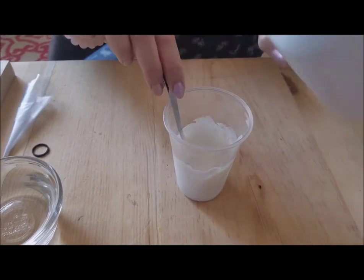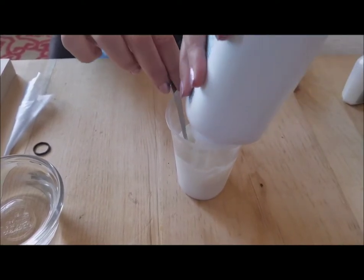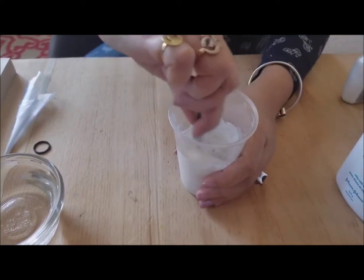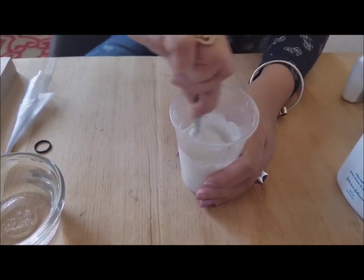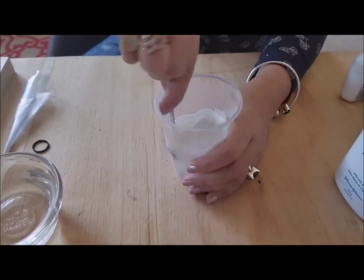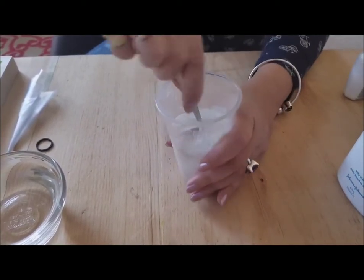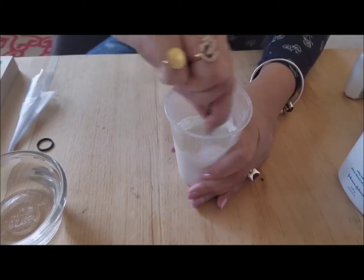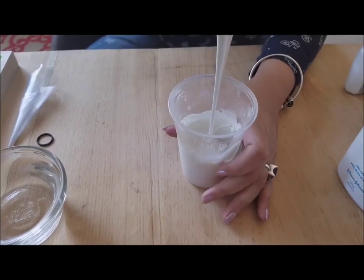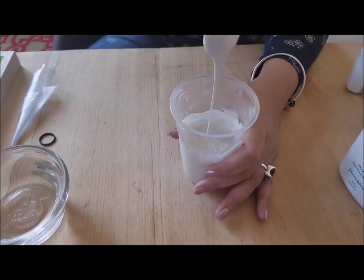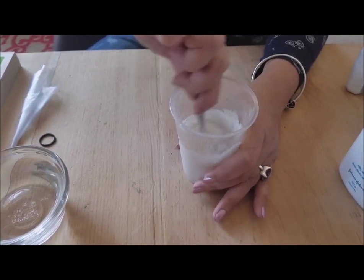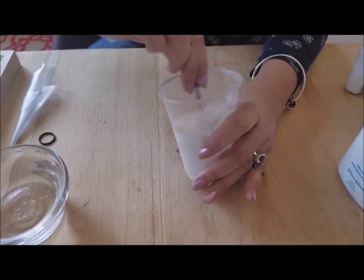See when I try to pour it, it should stop in between. It should be a thin line and it should stop. It's not stopping, so I'm going to add a little more. If you find it's way too thick, you can add one spoon of water or a little glue, but if you add little by little it should be good.